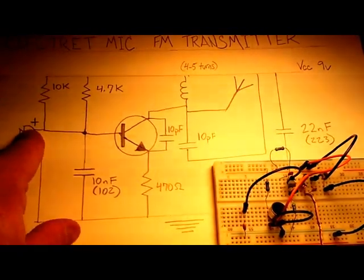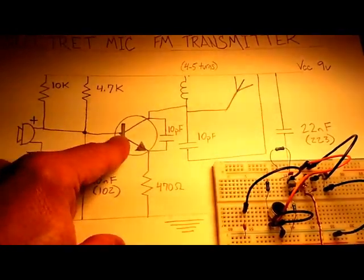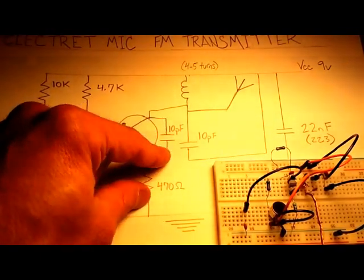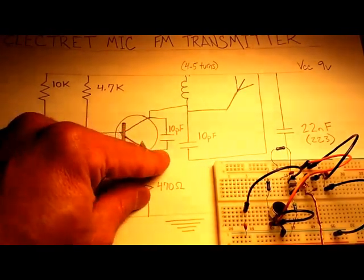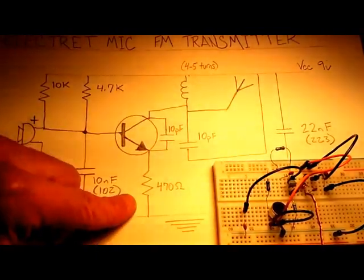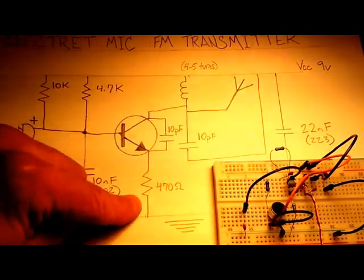And again, the positive lead out of your microphone is also going into the base. The emitter and collector are bridged together with a 10 picofarad capacitor acting as a feedback capacitor. The emitter, I have going into a 470 ohm resistor to ground.